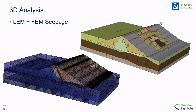It should be noted that all the principles discussed in this talk are applicable in a 3D analysis. This facilitates the relatively simple ability of the software to extend a 2D model to a 3D model, which captures the site reality more completely. The primary differences are that boundary conditions can change in 3D in the seepage model, and the geometry is likely to have inherent 3D effects which influence the shape and location of the slip surface.